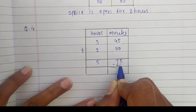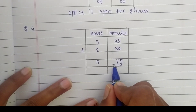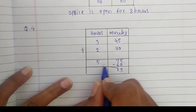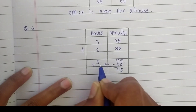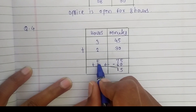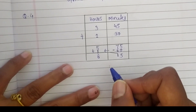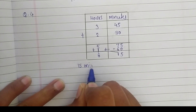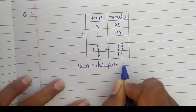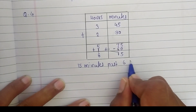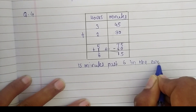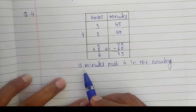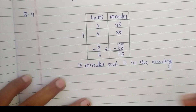Since we have 75 minutes, we convert 60 minutes into 1 hour, leaving 15 minutes. Adding that 1 hour to the hours column: 5 plus 1 is 6. The time we get is 15 minutes past 6 in the evening. So the movie ends at 15 minutes past 6 in the evening.